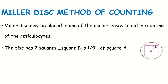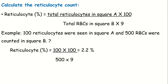For easier counting we use a Miller disc eyepiece. The Miller disc has two squares - a smaller square A and a larger square B. The reticulocyte percentage using Miller disc equals: reticulocytes counted in square A into 100, divided by total RBCs in square B into 9. For example, if we have 100 reticulocytes counted and 50 RBCs in square B, the reticulocyte percentage is 100 into 100 divided by 50 into 9, which equals 2.2%.